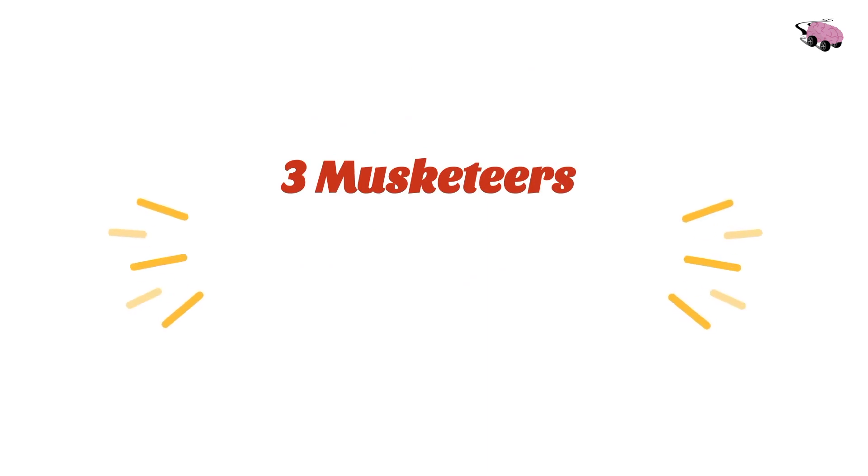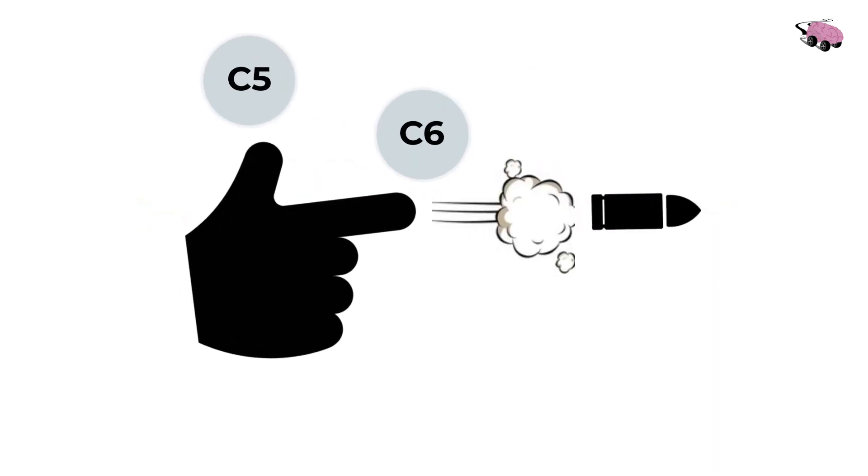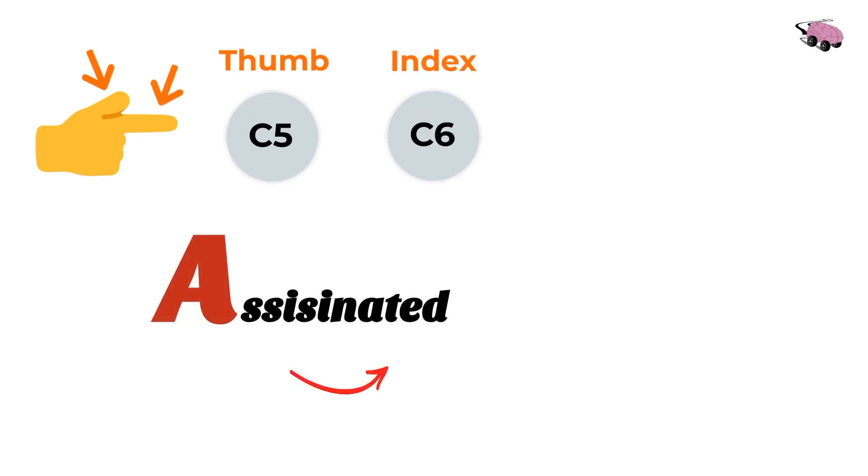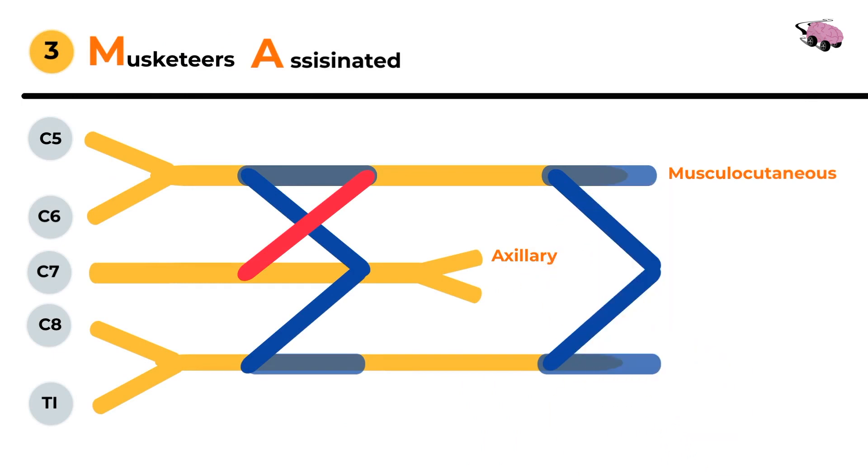Three musketeers assassinated. Remember assassinations are by making a gun sign with your thumb and your index finger. So thumb and index are C5 and C6, and assassinated starts with the letter A as for the axillary nerve.